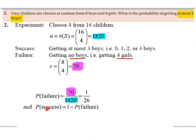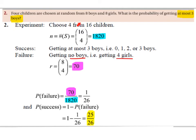Now we're going to take this away from one to get the success. The probability of success is equal to one minus the probability of failure, which is one minus one over 26, which is 25 over 26. So if we're choosing four children from eight boys and eight girls, the probability of getting at most three boys is 25 over 26. This was the shorter method — the success and failure method.